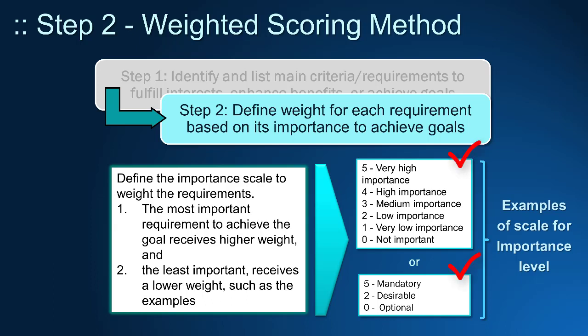In step two, it is time to determine the requirement's importance. You have two examples of scale. You can use a scale of high to low importance, giving numerical values: 5 for high importance and 1 for low importance. Another weighted scale can evaluate if the requirement is mandatory, desirable, or optional — giving 5 to mandatory requirements, 3 for desirables, and 1 for optionals.